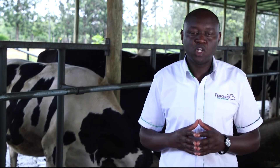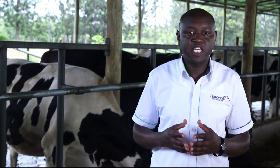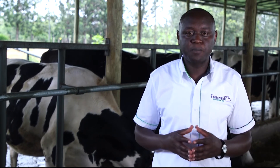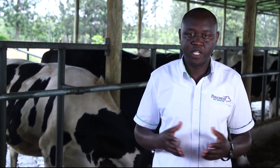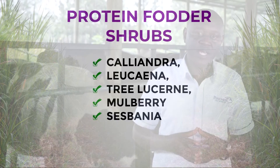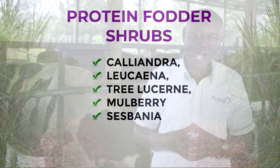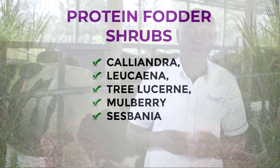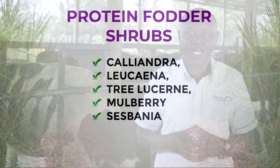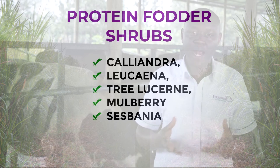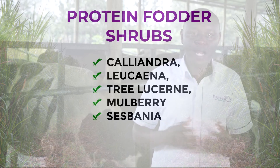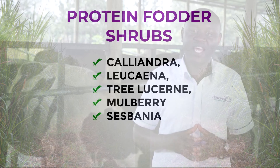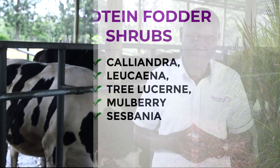We also have protein fodder shrubs in this category, which includes kalyadra, lukina, tree lusanne, mulberry, and sesbania.